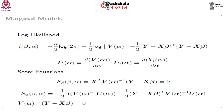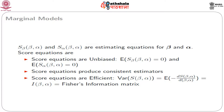Let u(α) be d/dα of V(α), and u_i(α) is the i-th element, the derivative of V_i(α). We have two score equations S_β and S_α; both are functions of β and α and serve as estimating equations. The score equations are unbiased — their expectations equal 0 — and they produce consistent estimators under certain regularity conditions.